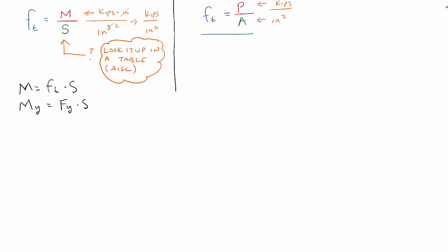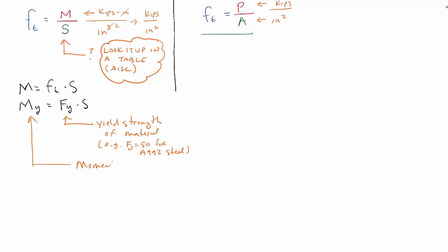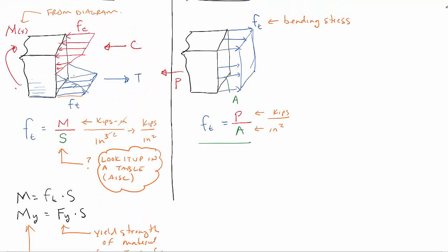I'm going to draw this out where this value here is the yield strength of the material. For example, Fy equals 50 for A992 steel. And MY is the moment at yield — another way to say that is that's the moment when these first fibers start to yield.